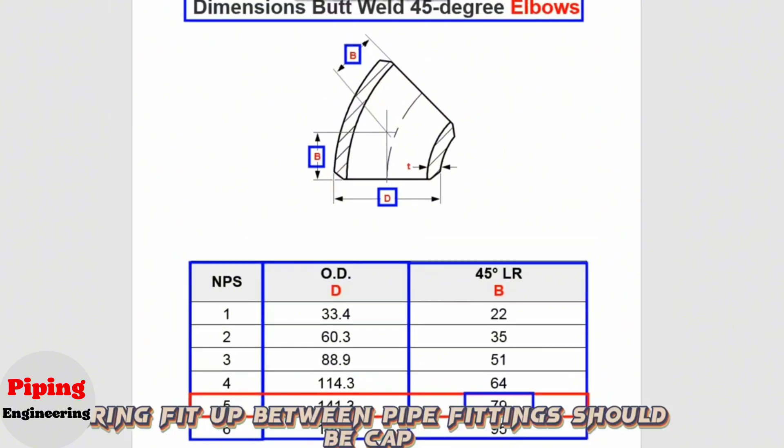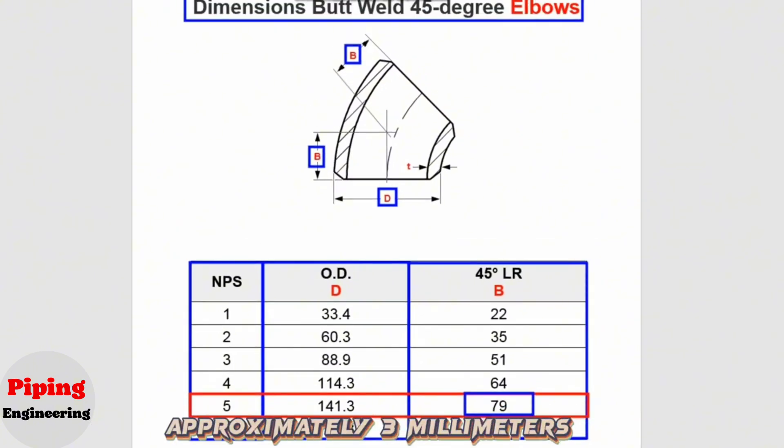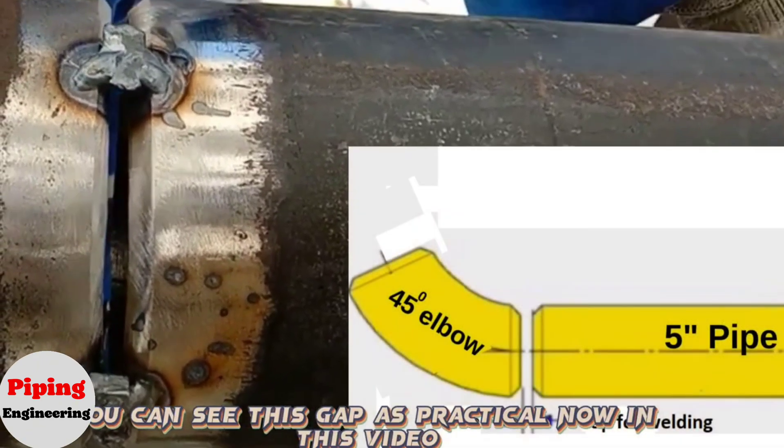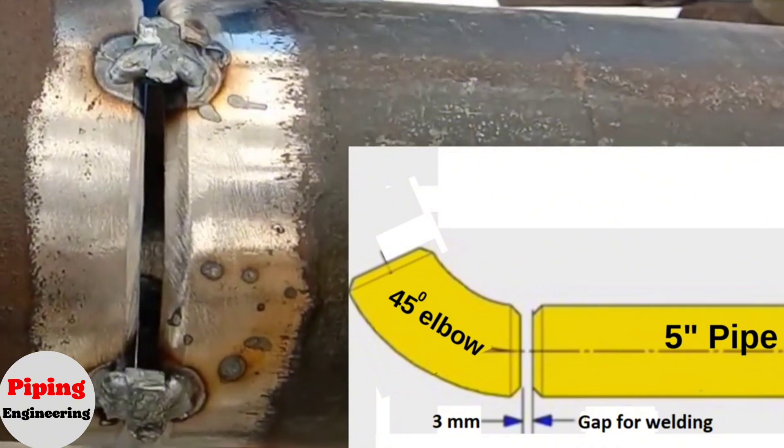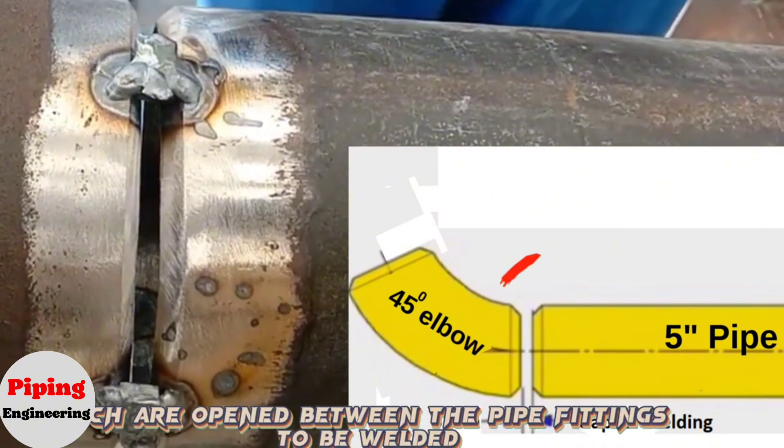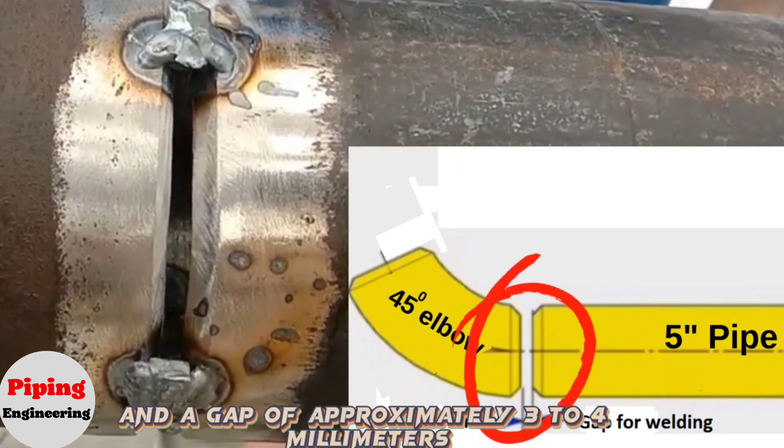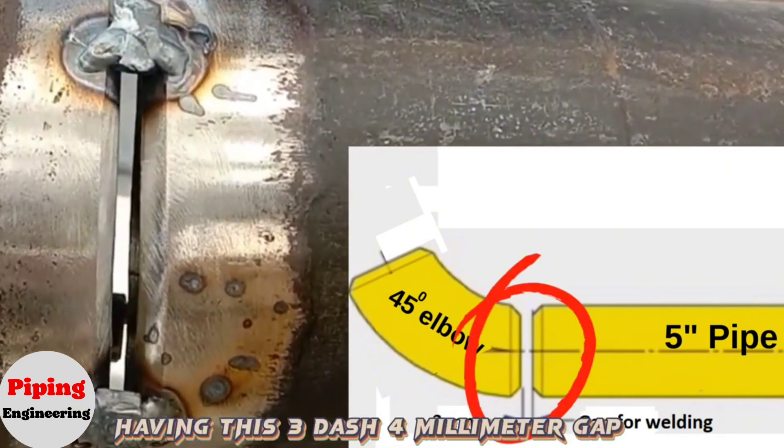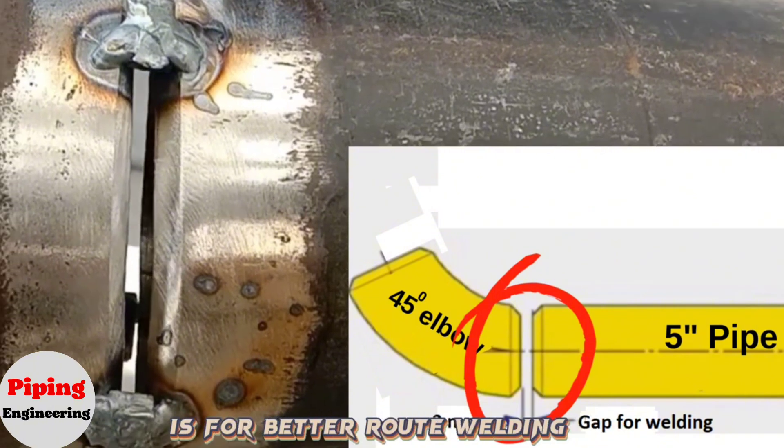During fit-up, between pipe fittings should be a gap of approximately 3 millimeters for welding. You can see this gap as practical now in this video. During fit-up, gaps are opened between the pipe fittings to be welded, approximately 3 to 4 millimeters. Having this 3-4 millimeter gap is for better root welding.